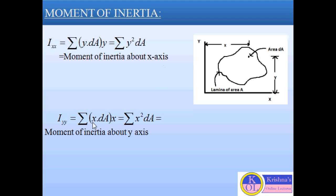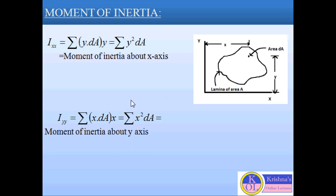Similarly, if we consider IYY as the moment of inertia about the Y axis, it will be the summation of X·DA — this is the moment of area — and multiplying by X gives the summation of X square DA. So IYY, the moment of inertia about the Y axis, equals summation of X square DA.